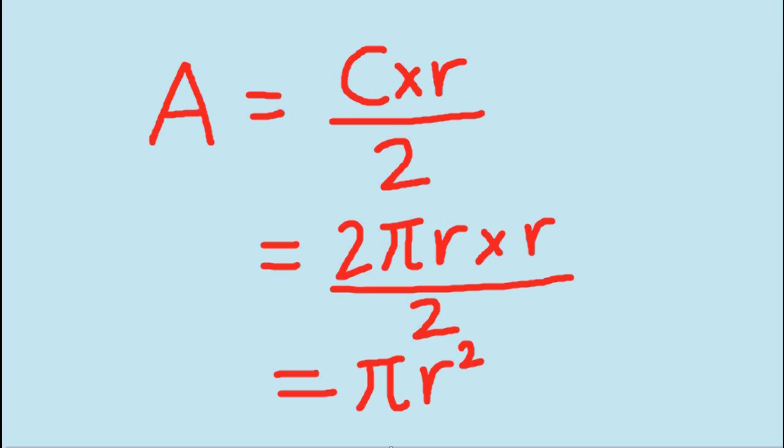If we know that the circumference equals 2 pi times radius and we put it here, then we get the result that the area must be pi r squared.